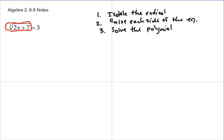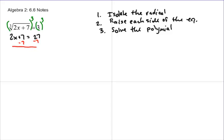There's nothing over here except the cube root of 2x plus 7. So what I want to do is raise both sides to the same power to eliminate the radical. Since I'm dealing with the cube root, I'm going to cube both sides. Whatever you do to one side, you have to do to the other. On the left I get 2x plus 7, and on the right, 3 cubed is 27. So now I've got 2x equals 20, divide by 2, and x equals 10.